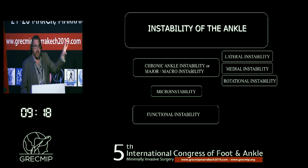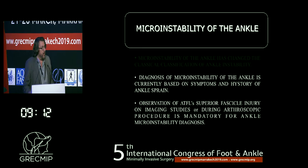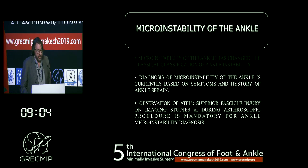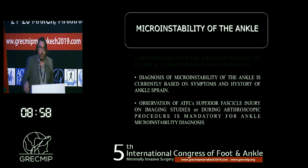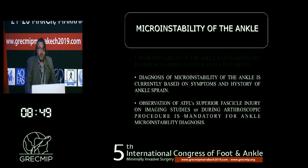Now we are talking about a lot of things when we talk about instability of the ankle. The current diagnosis of micro-instability is based on symptoms and the history of one or more ankle sprains. When you want to do the diagnosis, it is important to know how the anterior talofibular ligament is anatomically, but most importantly, how the injury of the anterior talofibular ligament presents — how we can see the superior fascicle when it is injured.